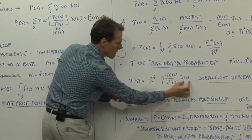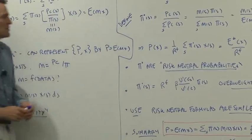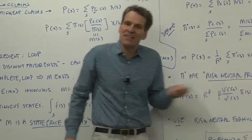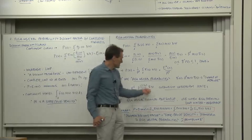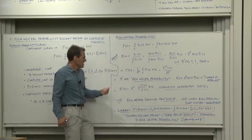Let me expand the M into the ratio of marginal utilities, and you can see what's happening is we take the original probabilities and then we give higher probability to high marginal utility states. So the risk neutral probabilities, they overweight unpleasant states of nature, where consumption is low and marginal utility is high. And that's a very intuitive way of thinking about risk aversion.